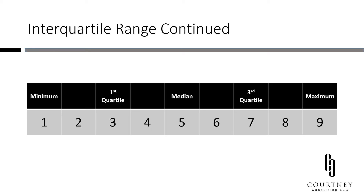Here's a simple example using a distribution from one to nine. One is the minimum score and nine is the maximum score. Five is the median, or the exact middle. The first quartile is three — it is the number exactly between the minimum and the median. The third quartile is seven — it is the number exactly between the median and the maximum.